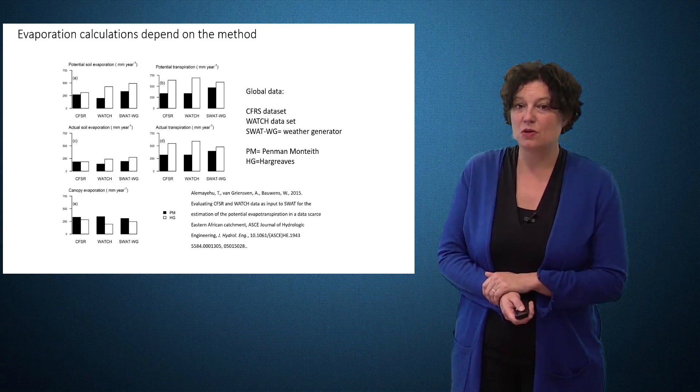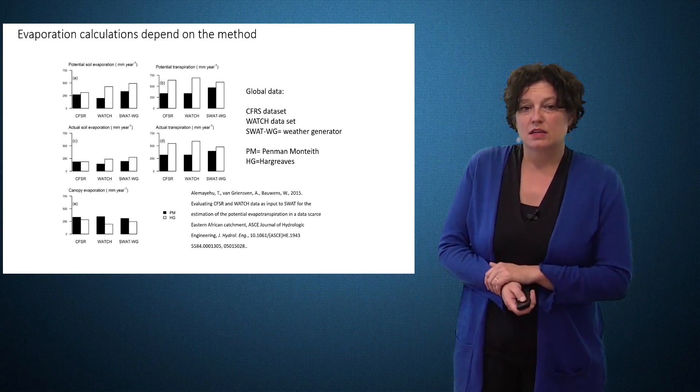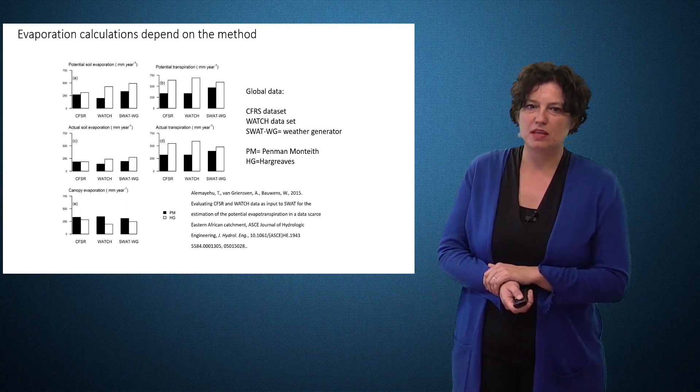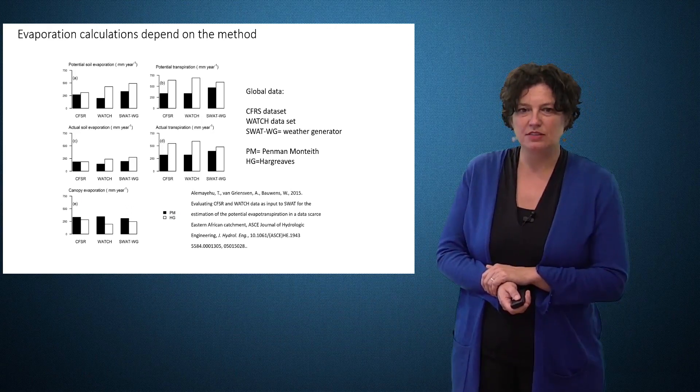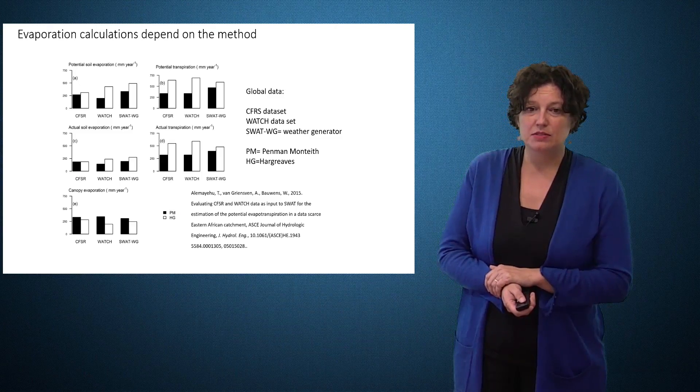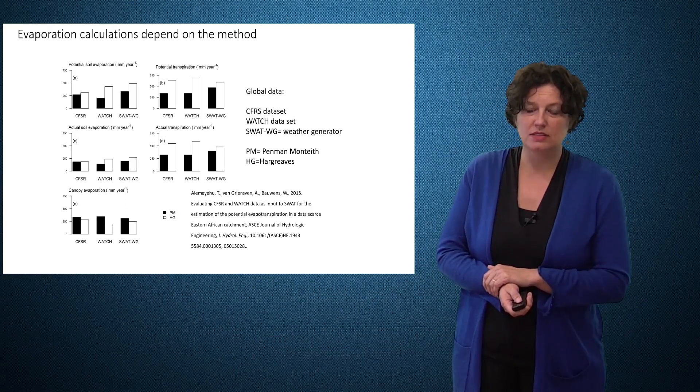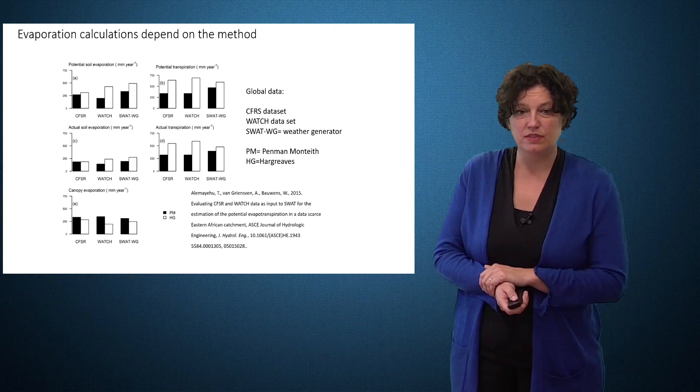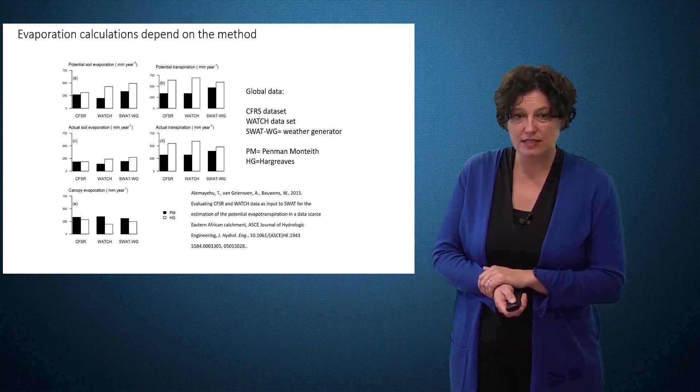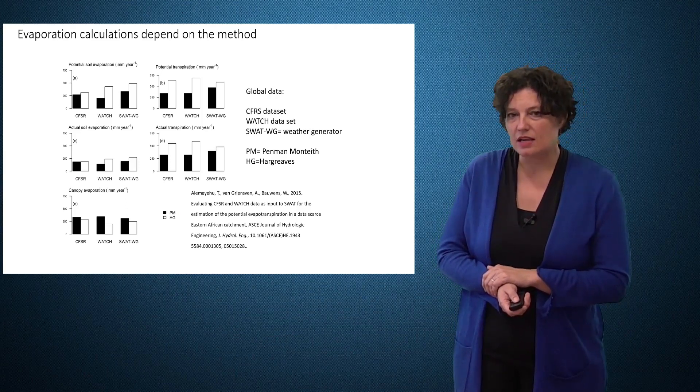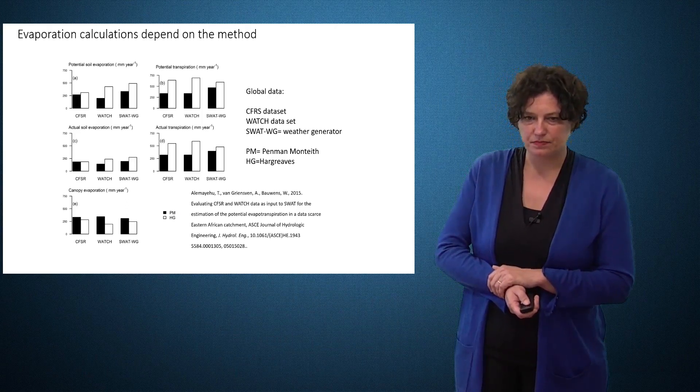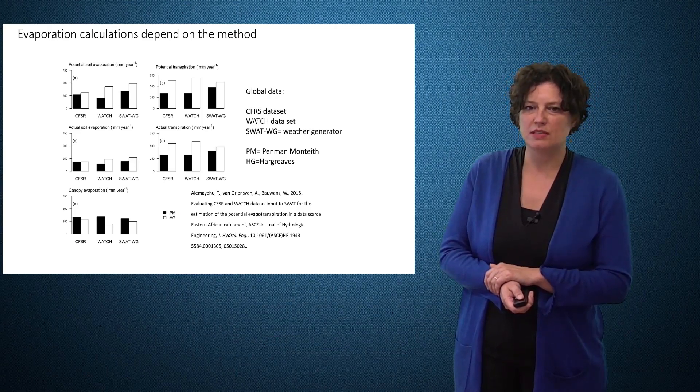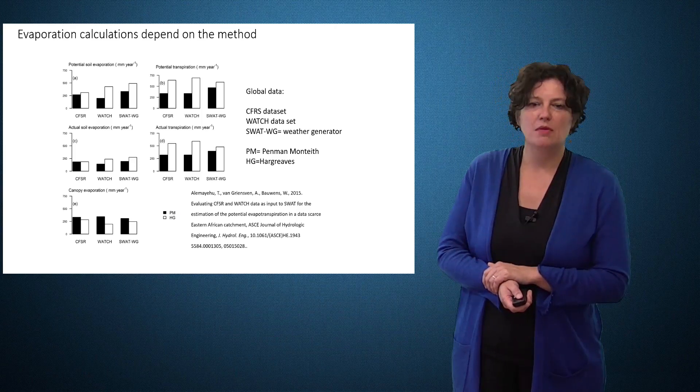In this slide we show that the methods influence the results for evapotranspiration, but this also in relation to the data. We compare two methods, the Penman-Monteith PM in black and the Hargreaves method HG in white. You can see that sometimes the results differ a lot. This also depends on the data that we used. So it is very important to think about the choice of the methods as well as the choice of the data. If you have a good data set, then the Penman-Monteith is likely to be the best method. But if you don't have a good data set, then maybe it is better to use a simpler method. We compared here three different data: CFRS, WATCH, which are global data sets, and we also use the weather generator.